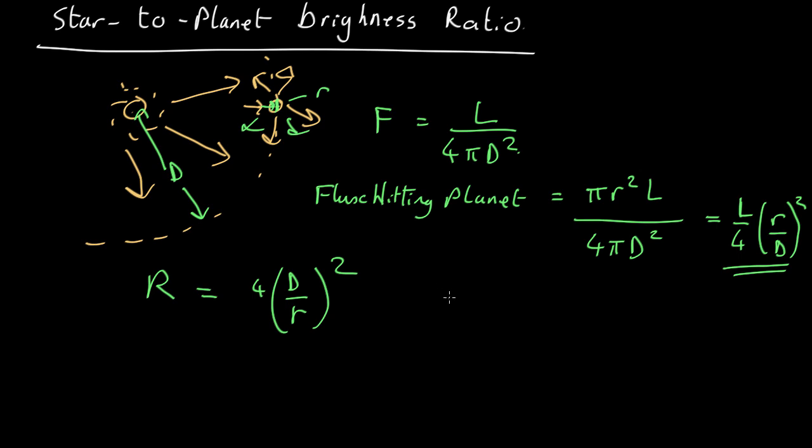Now if we plug in some numbers, let's say you take for example Jupiter. For Jupiter, its radius is about 7×10⁷ meters, its distance from the Sun is 5 astronomical units. For Jupiter, that comes out as about 5×10⁸, so nearly a billion times difference. And that's assuming that all the light that hits the planet bounces off. In practice, only a small fraction is going to. So in reality, the ratio of star brightness to planet brightness for something like Jupiter is going to be about 10⁹, about a factor of a billion.